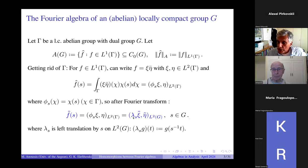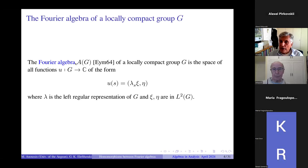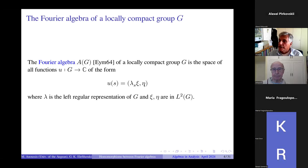Here I'm using the notation lambda sub s for the left translation operator on L2 of G. So this blue formula makes sense on the group G and does not require the dual group gamma. Therefore, following Eymard, I can define for any locally compact group — abelian or not — the Fourier algebra to be the space of all functions of this form: you take two vectors xi and eta in L2 of G, you translate one by s, and take the scalar product.